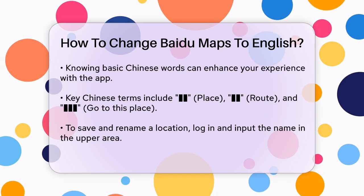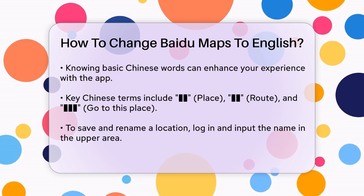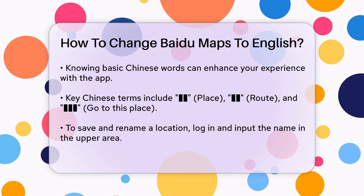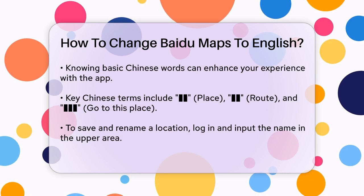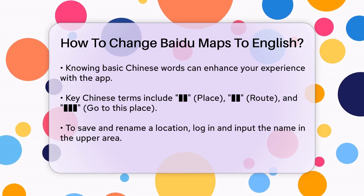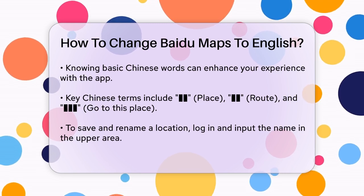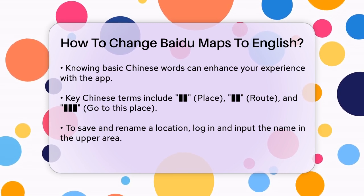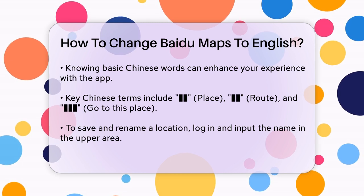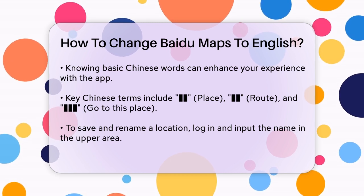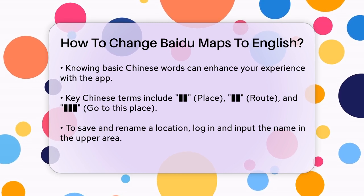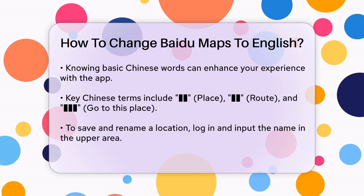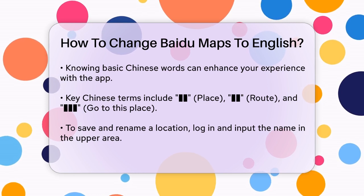For specific functions, you might need to know some basic Chinese words. For example, "di dian" means place, "lu xian" means route, and "dao zhe qu" means go to this place. Knowing these words can help you understand the app better, especially when using features like saving favorite locations or finding nearby services.